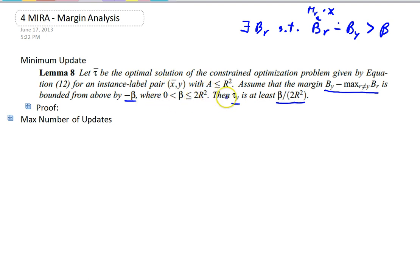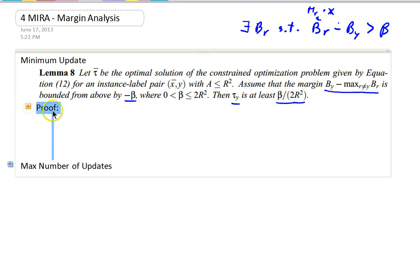They say in this range, because if beta is bigger than 2r squared, then we've got that maximum update of 1. So, now the proof, I'm just going to show you.